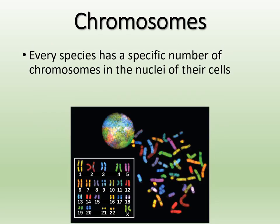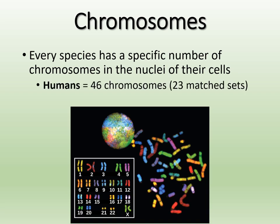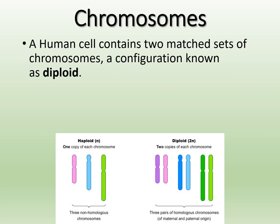We have so much DNA in our genome that we have to pack it very specifically into chromosomes to fit into the nucleus. Every species has a specific number of chromosomes — as humans, we have 46 chromosomes. When you talk about chromosomes, you're talking about paired chromosomes, so we really have 23 pairs, giving us 46 individual chromosomes. They're all paired, each pair looks similar in size and shape, and then we have our sex chromosomes as well.